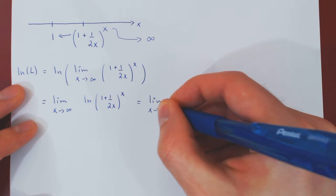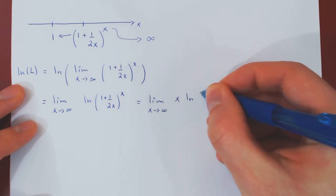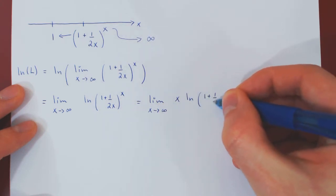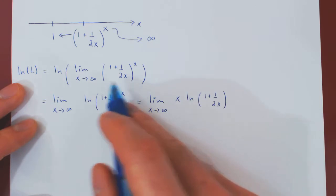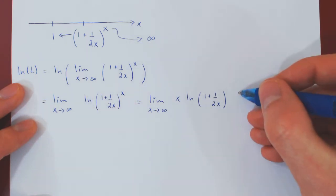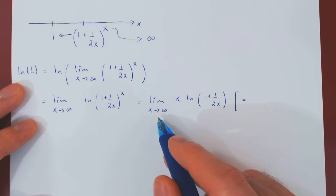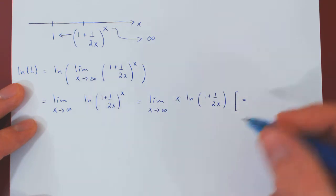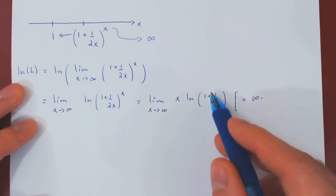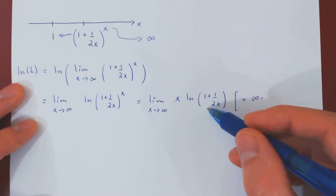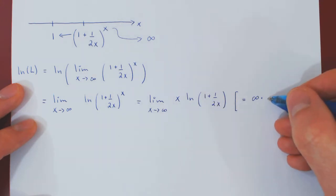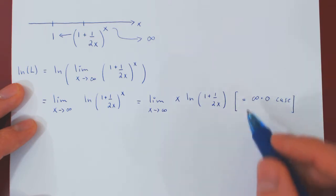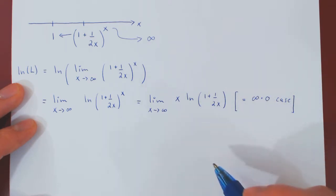And let's see what kind of case we have once we've applied the ln to the limit and have brought the exponent down. Well, as x tends to infinity, x tends to infinity times, and the second argument, as x tends to infinity, 1 over 2x tends to 0, so we're left with the ln of 1, and the ln of 1 is 0. So as expected, we now have a product, and a very interesting one, because it is an infinity times 0 case. So if we send the x down, we will now be able to use L'Hôpital's rule.